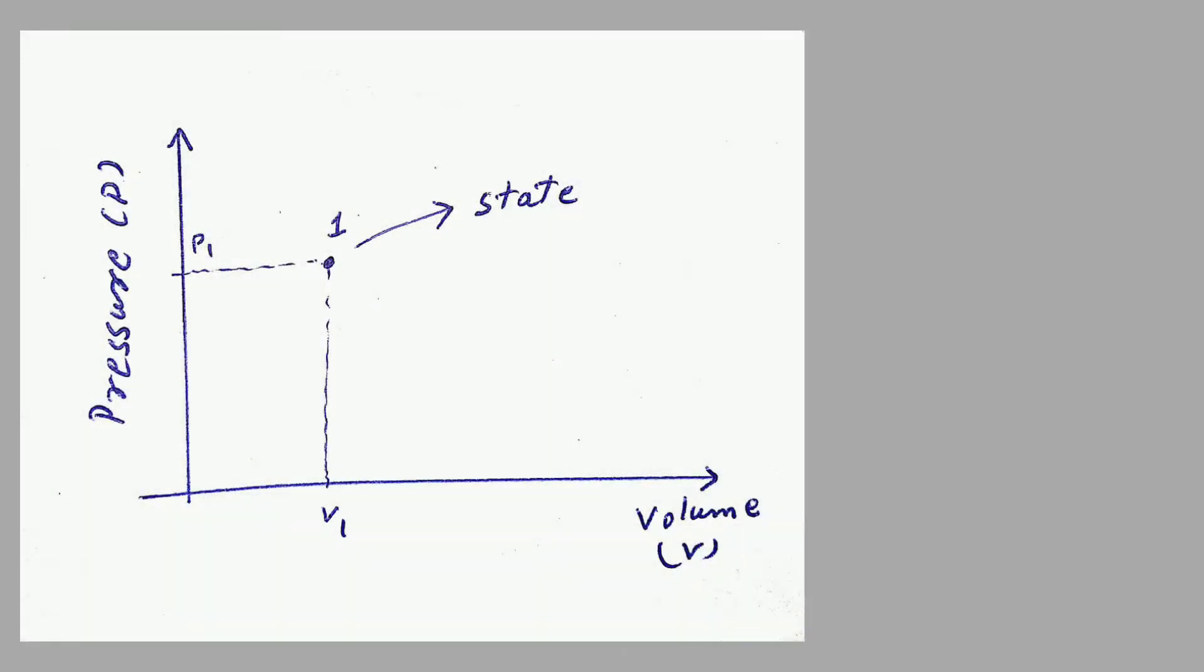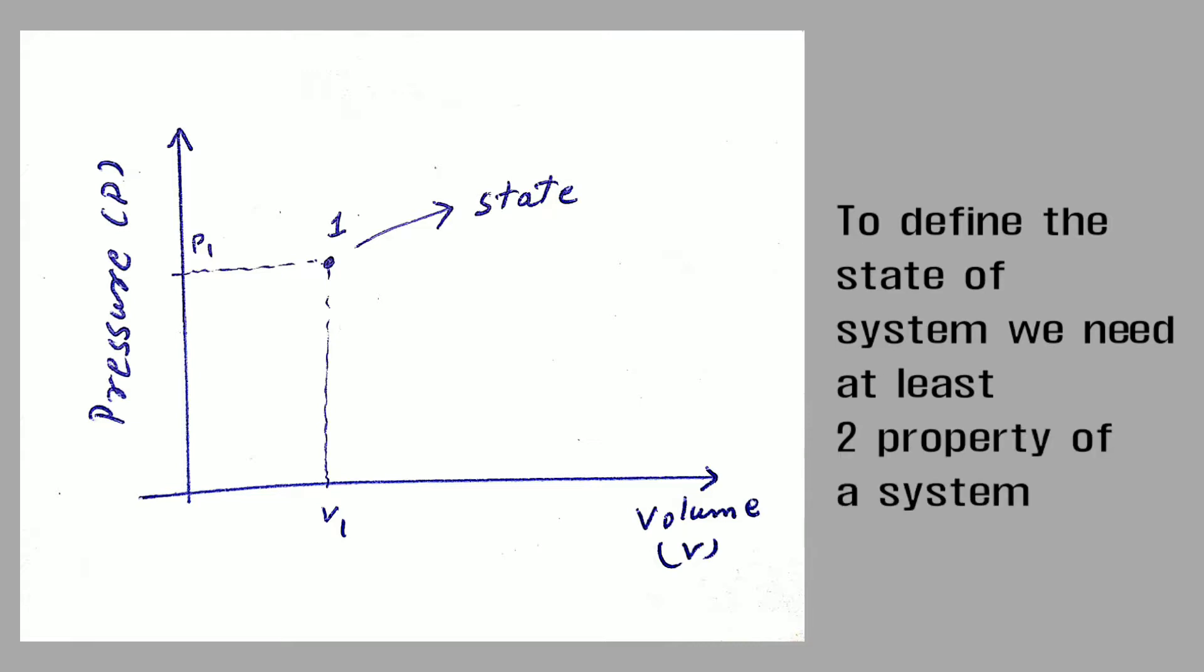Now what is state? As you know, if we take two properties on the x-axis and y-axis and take a point 1. So this point has some pressure P1 and has some volume V1. So this point is called as state of a thermodynamic system.